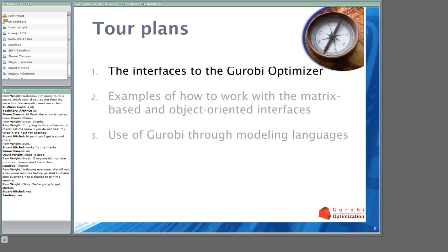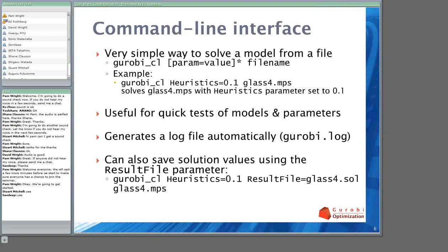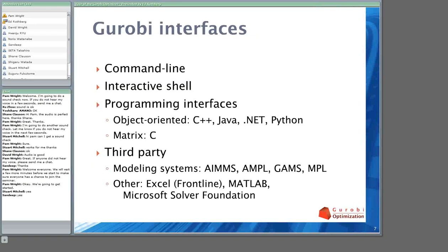Let's get started with the tour. The first part is to talk at a high level about all of the interfaces that we provide to the Gurobi Optimizer. The set of interfaces is listed here — I'll go through these one at a time and then have a slide for each. The first interface is just a simple command line interface. You just type a command, hit return, and if you have a model stored in a file, the optimizer starts solving the model and produces a log file. It gives you a very quick way to get started — you can install the product and be solving a model in five minutes.